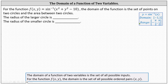Applying this to the given function of two variables, we know the input x² + y² - 10 must be in the closed interval from -1 to 1. Therefore, x² + y² - 10 must be greater than or equal to -1 and less than or equal to 1, which we can state using this compound inequality.